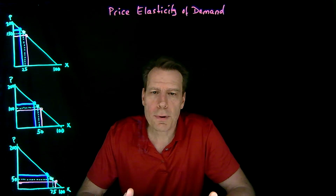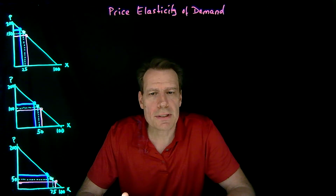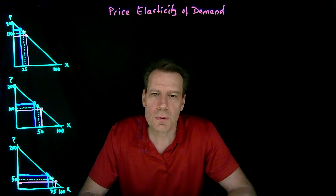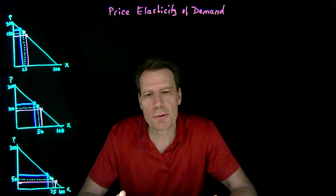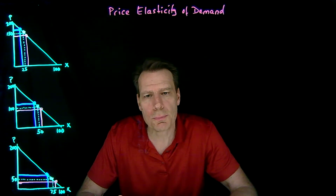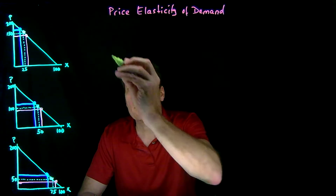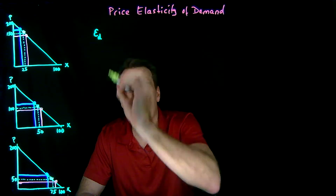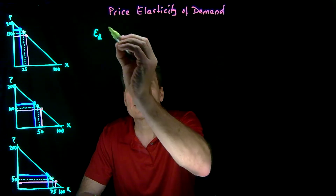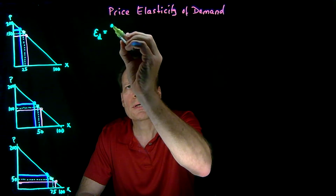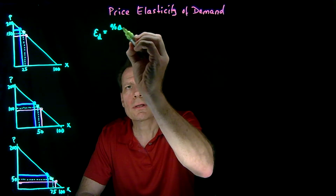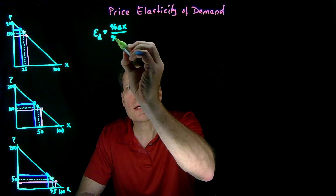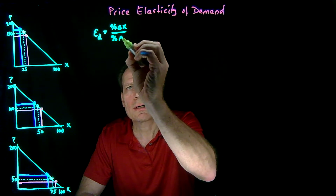Another idea you've probably seen in a previous economics class is the idea of a price elasticity of demand, which is simply a measure of how responsive consumers are to price changes. It's often denoted by this script E with a D subscript, and it's defined as the percentage change in the quantity of x that you demand divided by the percentage change in the price.